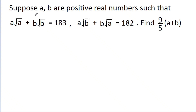In this video, we have given that a, b are positive real numbers such that a root a plus b root b is equal to 183 and a root b plus b root a is equal to 182, and we have to find the value of 9 by 5 times a plus b.